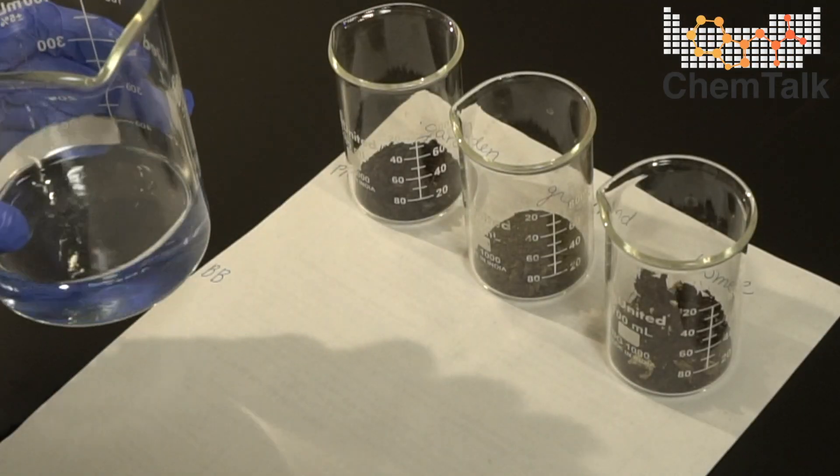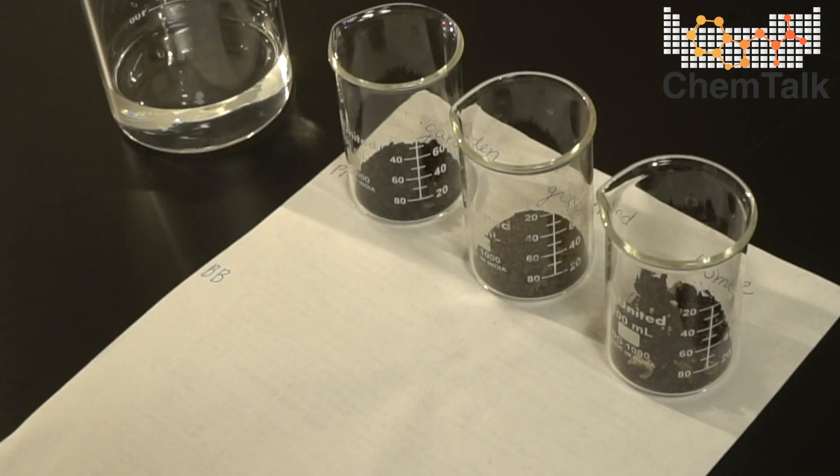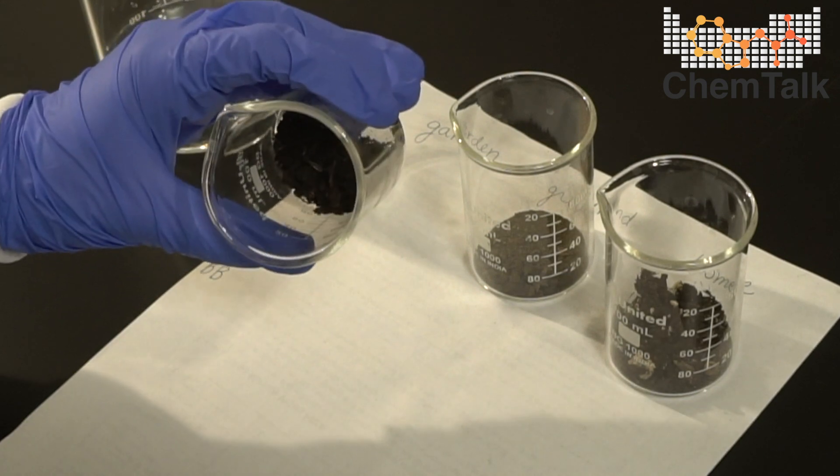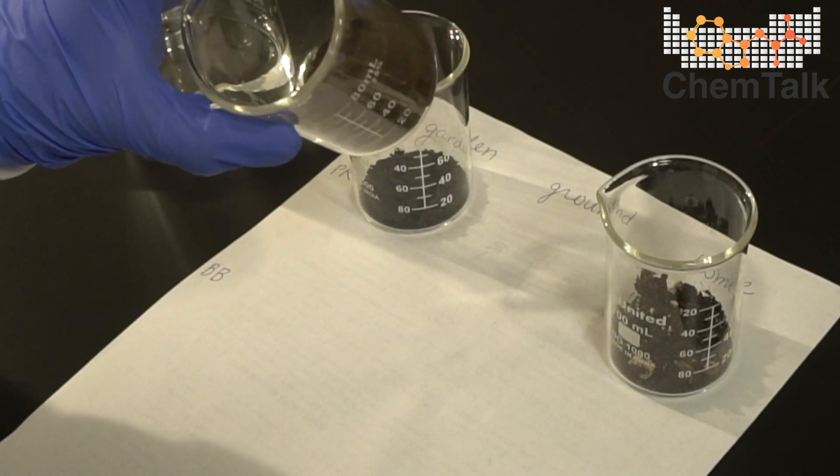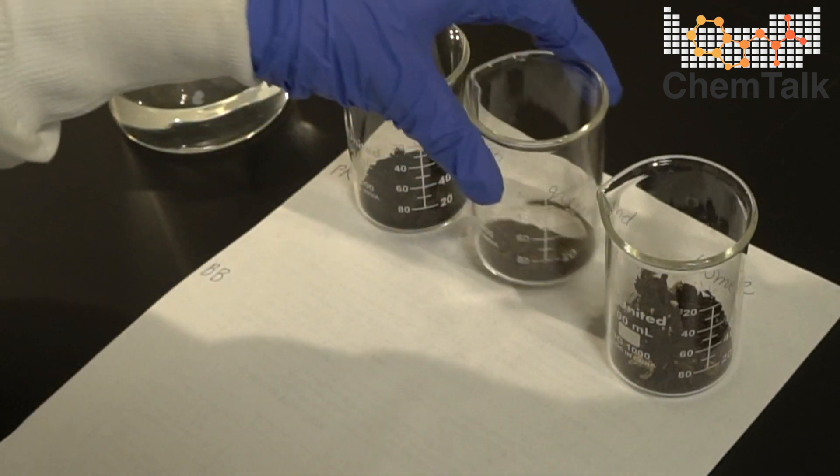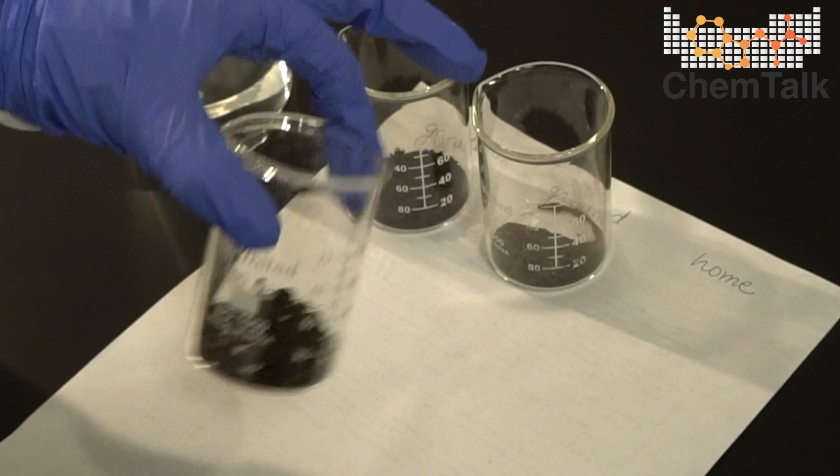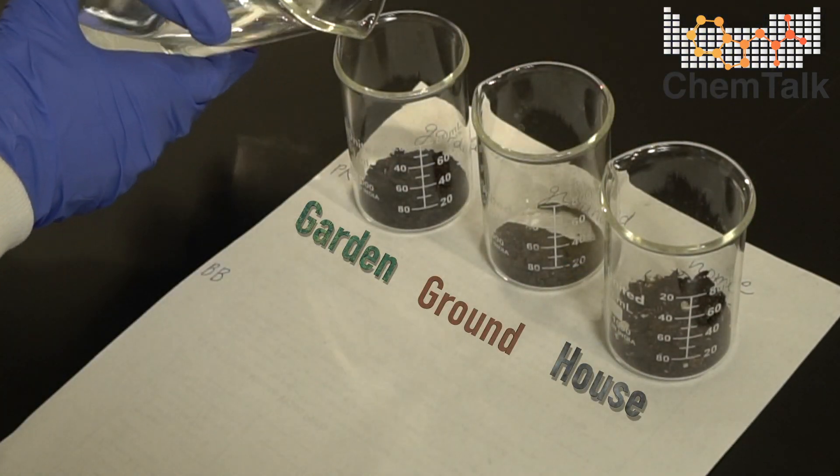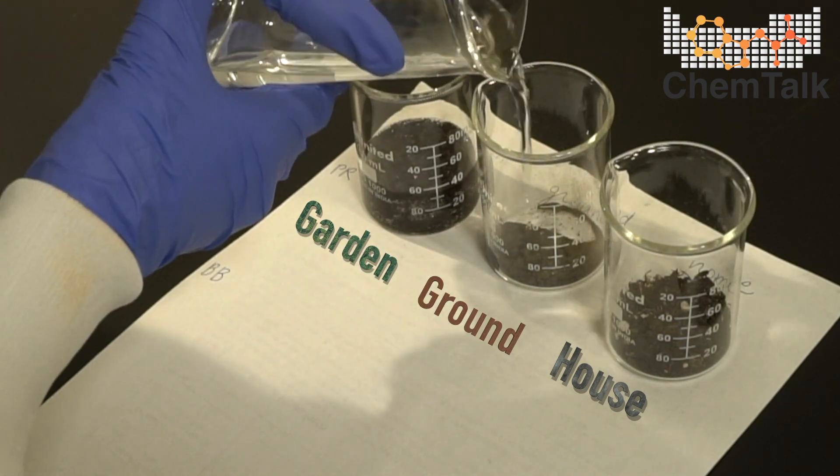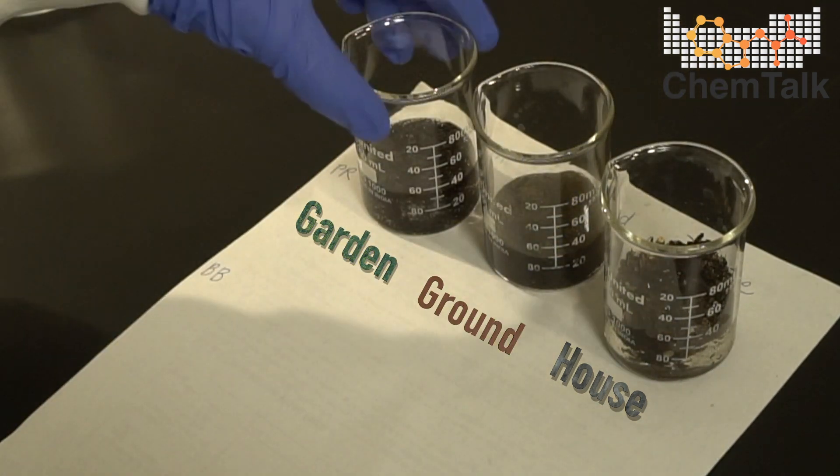I'm going to add water to these three samples and mix it around before filtering and testing the pH. This is the soil from the garden outside. This is the soil from the ground outside. And this is soil from my house, a separate location. And now I'm just going to add a little bit of water. Let it soak for a little bit and mix it around.